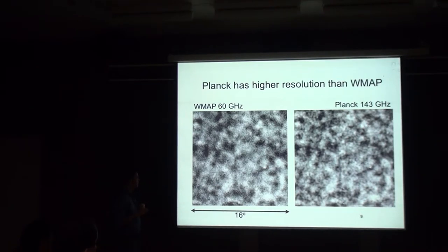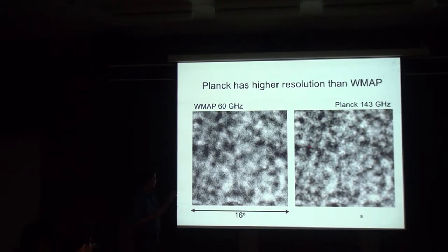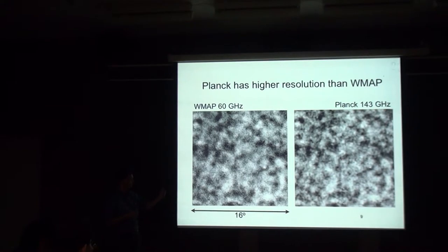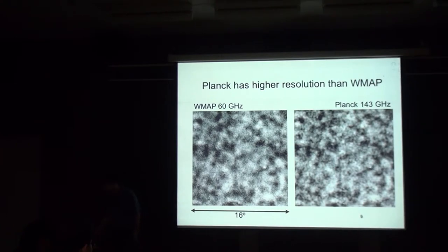Planck has substantially higher resolution and much lower noise. That was the improvement. We're mapping this photon field that came all the way across the universe just to get to us — we should measure all its fluctuations. This is telling us what the universe looked like at a redshift of 1,000. What I'm going to talk about today are mainly things done with the South Pole Telescope.